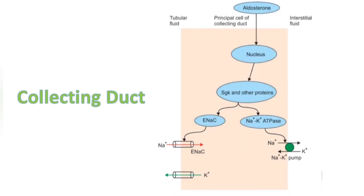In collecting ducts, sodium reabsorption is helped by aldosterone. Aldosterone acts on principal cells of collecting ducts to produce Sgk and other proteins. Then epithelial sodium channels (ENaC) and sodium-potassium ATPase are produced. ENaC is located on the luminal membrane and allows sodium from tubular fluid to enter cells. Potassium-sparing diuretics act on collecting ducts by antagonizing the effect of aldosterone.